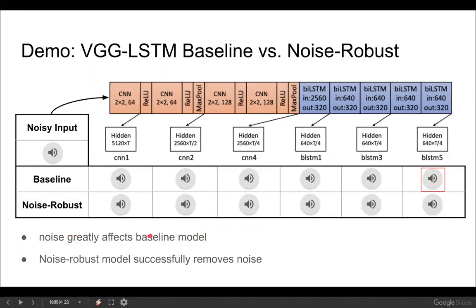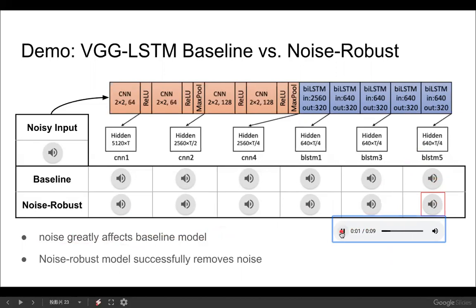The noise actually greatly affects the baseline model in the last layer, resulting in a higher word error rate for the baseline model. In contrast, the noise-robust model successively removes noise.